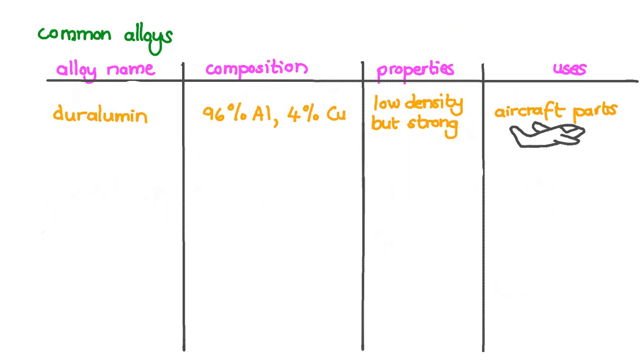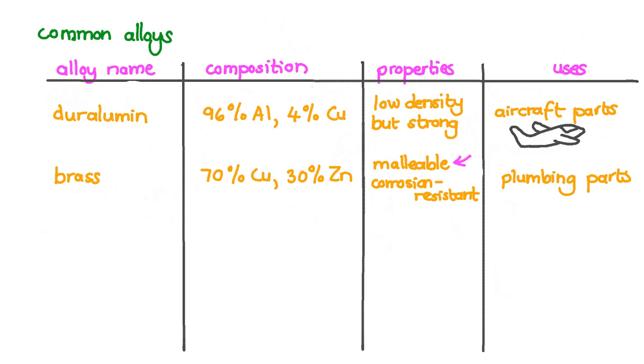Duralumin is a common aluminum alloy made largely of aluminum and a little bit of copper with other metals. It is low in density and light weight because of the aluminum but is very strong because of the other alloyed elements, making it perfect for use in building aircraft parts. Brass is the name given to copper zinc alloys. These are usually mostly copper with added zinc. Brass is more malleable than copper and zinc alone and is corrosion resistant. It is perfect for use in plumbing parts.